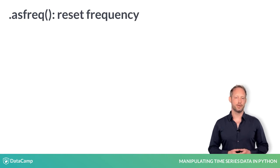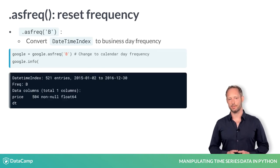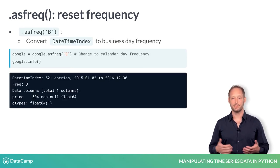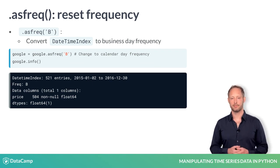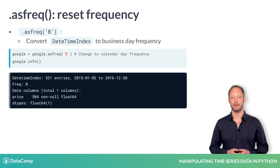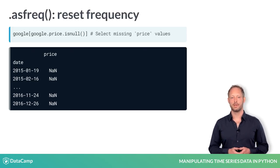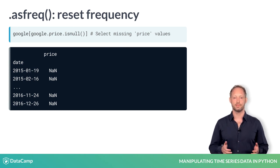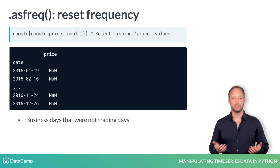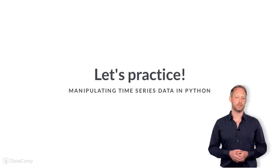You can also convert the DateTime index to business day frequency. Pandas has a list of days commonly considered business days, and the alias for business day frequency is B. You will now see a smaller number of additional dates created. You can use the method isNull to select the missing values and check which dates are considered business days but have no stock prices because no stocks were traded. Let's now practice your new time series skills.